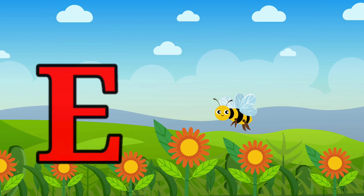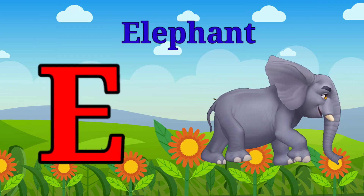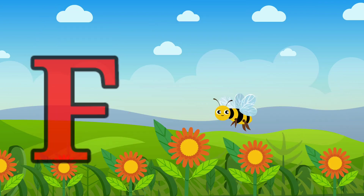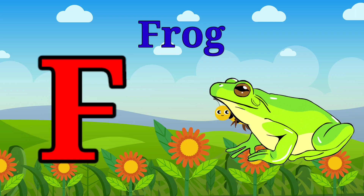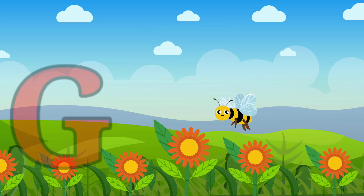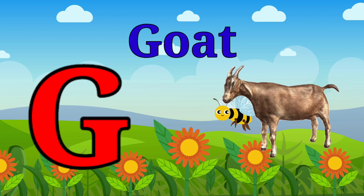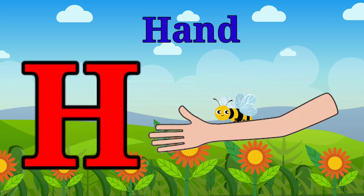E is for elephant, e-e-elephant. F is for frog, f-f-frog. G is for goat, g-g-goat. H is for hand, h-h-hand.